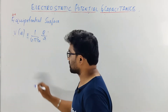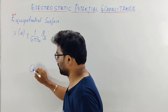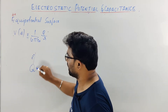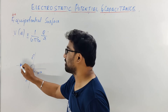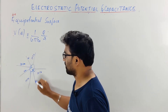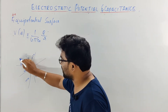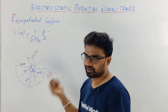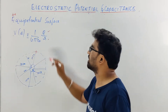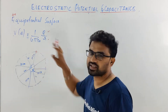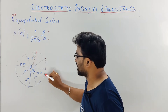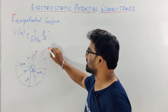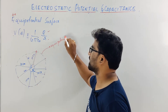So potential depends on the charge Q as well as the distance R. Now Q is a constant for a given charge. If I take a distance of, say, 10 centimeters from the charge — all over 10 centimeters — all the potentials are the same. So if I take 10 centimeters from this charge everywhere, the potential becomes the same. Joining all those points is nothing but the Equipotential Surface.